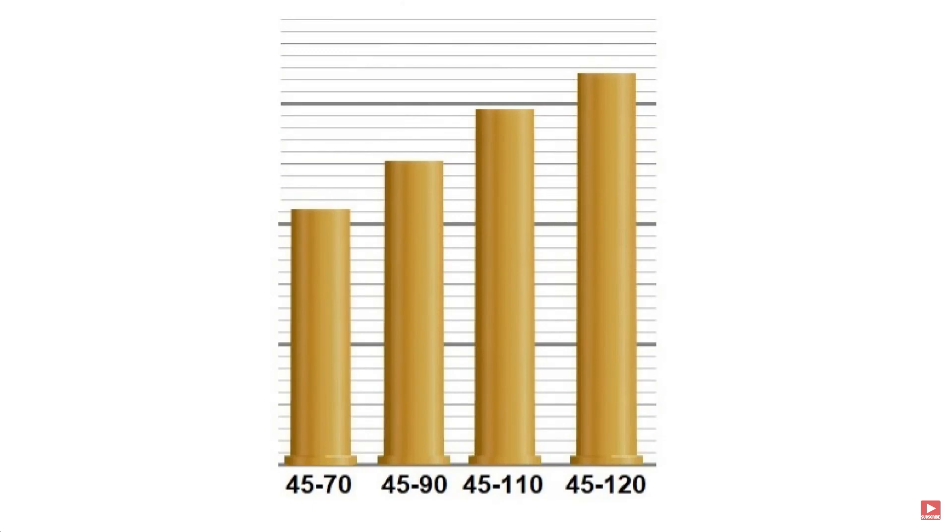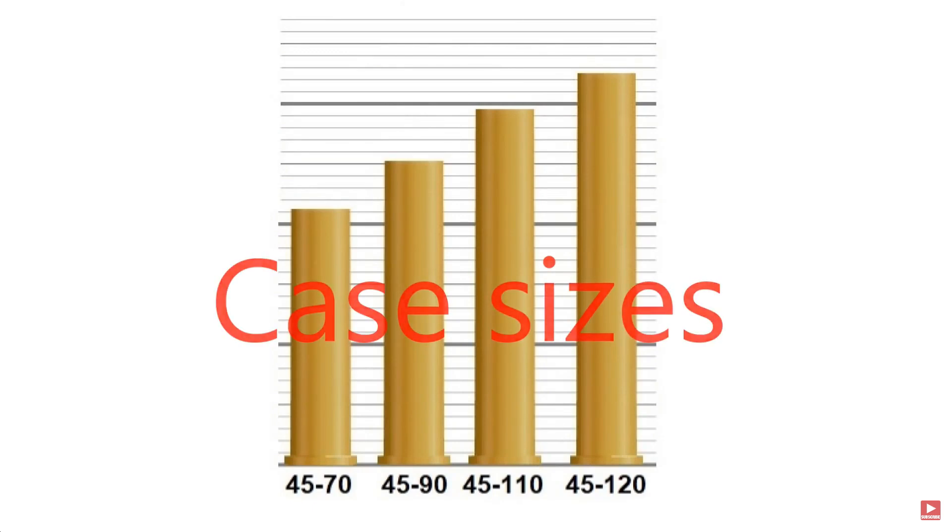This ties into why old black powder cartridges were named the way they were — the .30-30, .40-40, .45-70, .45-90, .45-110, used in firearms like the Sharps. The first number was the caliber, the size of the projectile, and the second number was the grains of black powder. Because of how black powder's pressure curve works, simply using more powder — with more barrel length to use it — could yield more velocity.